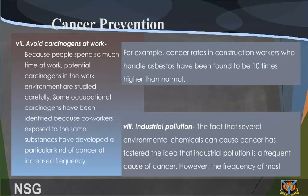7. Avoid Carcinogens at Work. Because people spend so much time at work, potential carcinogens in the work environment are studied carefully. Some occupational carcinogens have been identified because co-workers exposed to the same substances have developed a particular kind of cancer at increased frequency. For example, cancer rates in construction workers who handle asbestos have been found to be 10 times higher than normal.